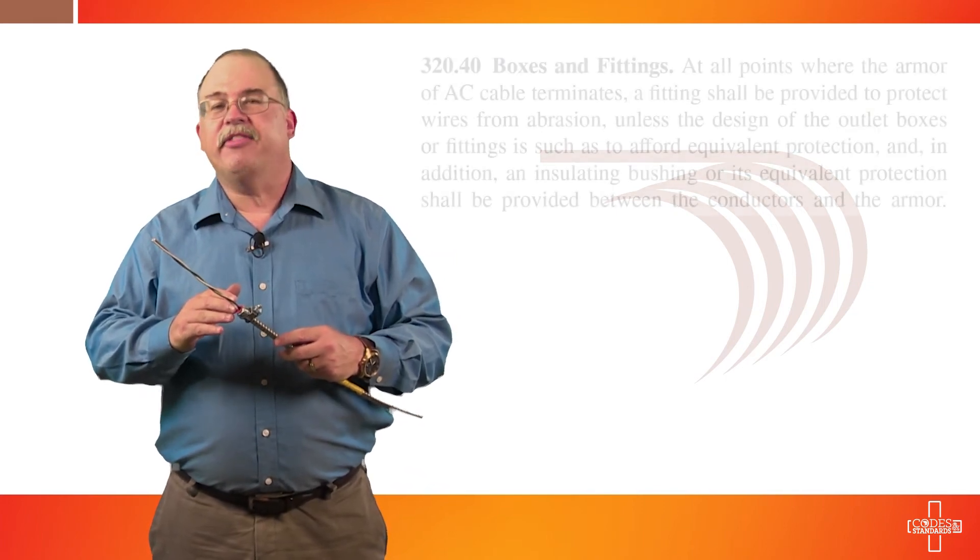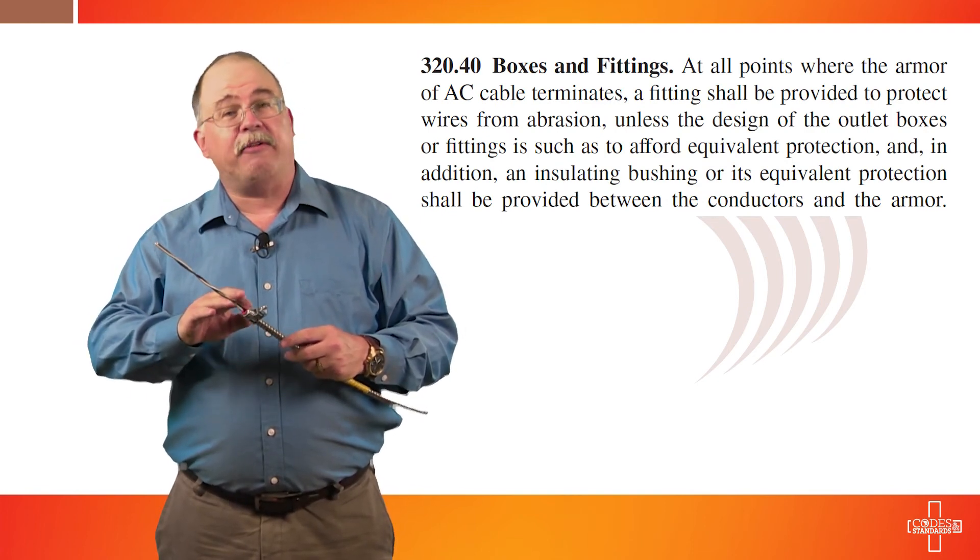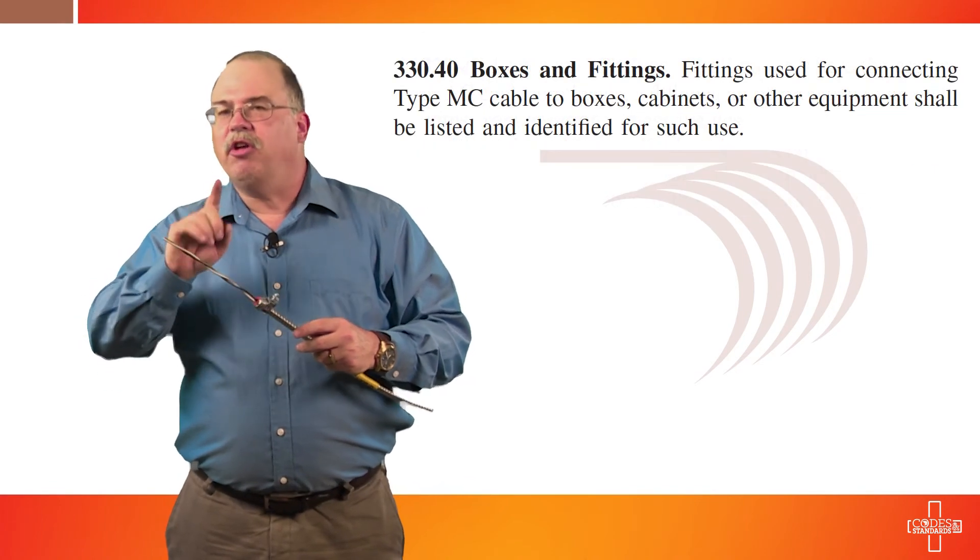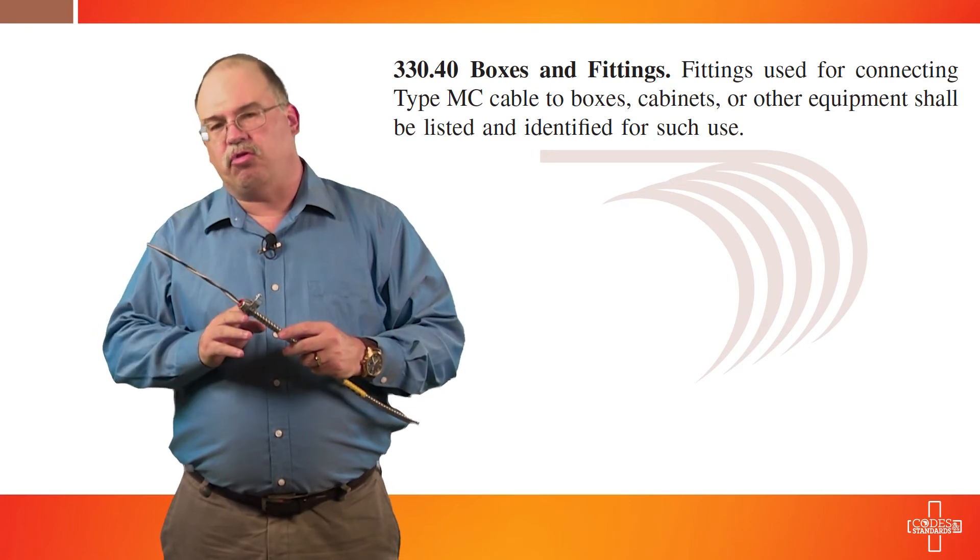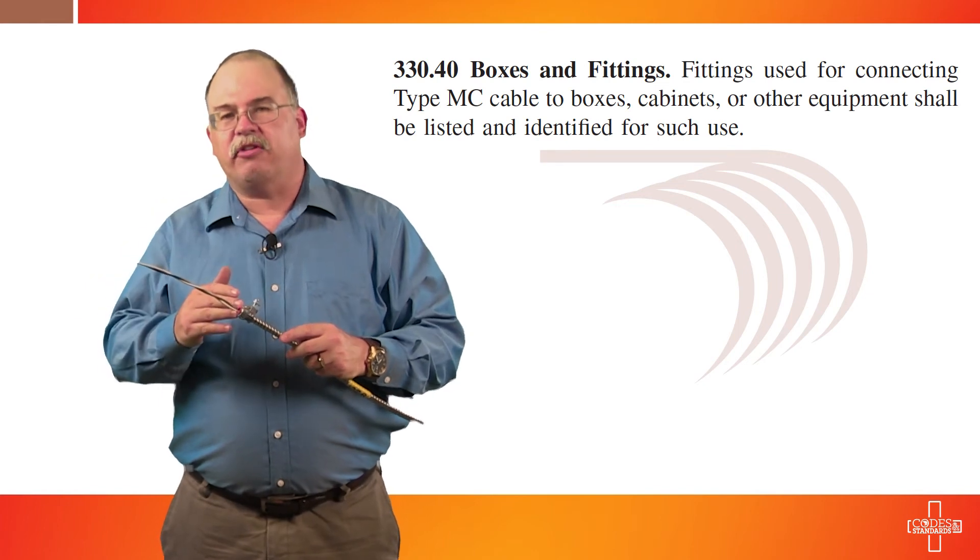Now there's a couple interesting things to talk about when it comes to fittings. You'll notice in this fitting it has an anti-short bushing in the end. Type MC products do not require an anti-short bushing. If I was dealing with a Type AC or armored cable product, then I would need an anti-short bushing in accordance with section 320.40 of the National Electrical Code. But since this is a Type MC product, we would look at section 330.40 of the National Electrical Code which deals with fittings and connectors. And you'll notice that it doesn't require any anti-short bushing. This product happens to have it integrated into the connector and that's perfectly fine.